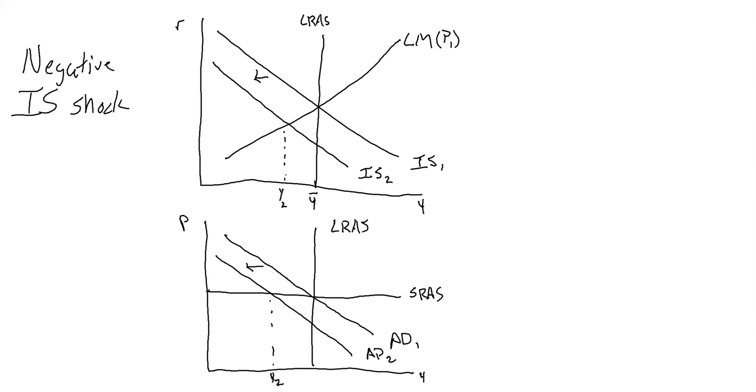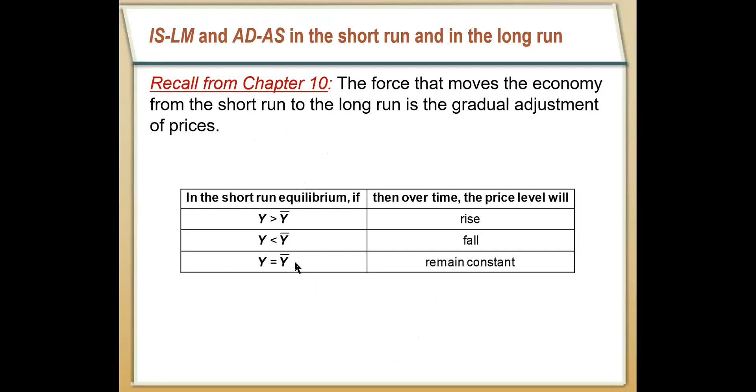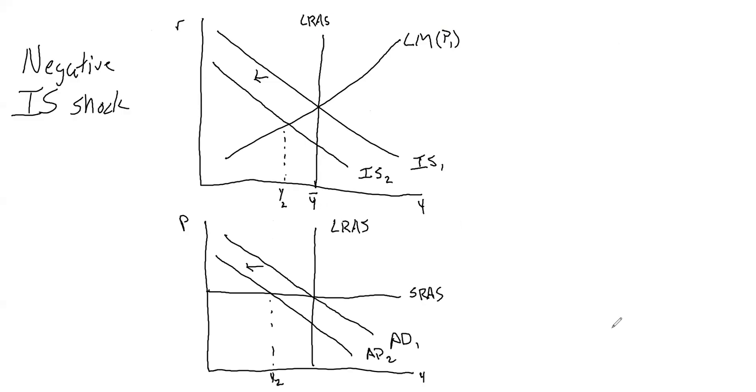So we know that when our total output in the short run Y is less than our potential output Y bar, over time our price level is going to have to fall. A decline in the price level is going to have to present itself in the LM curve. It's the only place in the IS-LM model that P shows up.